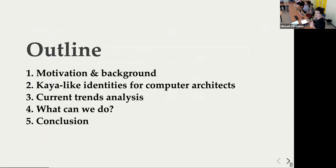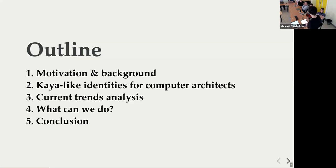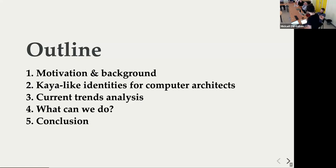The outline of my presentation: I will start with a bit of motivation and context, then I will expand on the three identities you can find in the paper. We then analyze the current trends — where we are going with the current use of energy and current trajectory — and what we can do to try to do better than the current trends, and then we conclude.